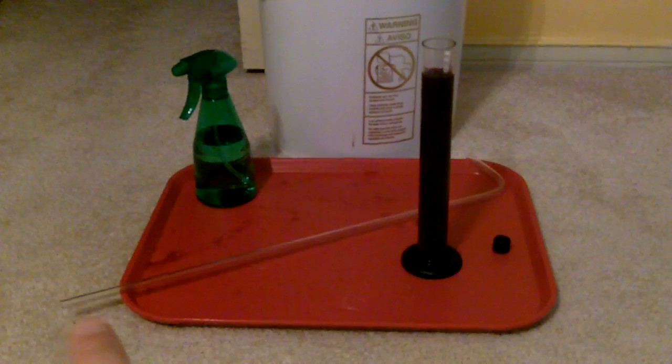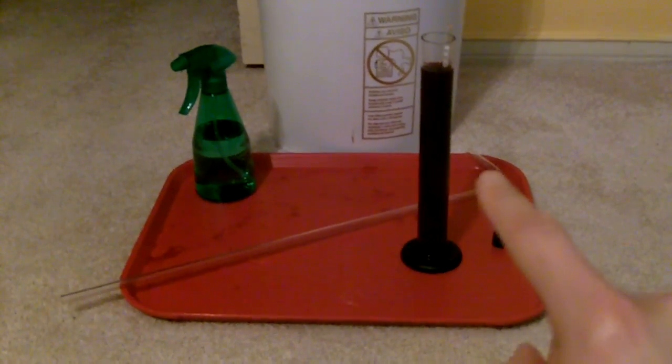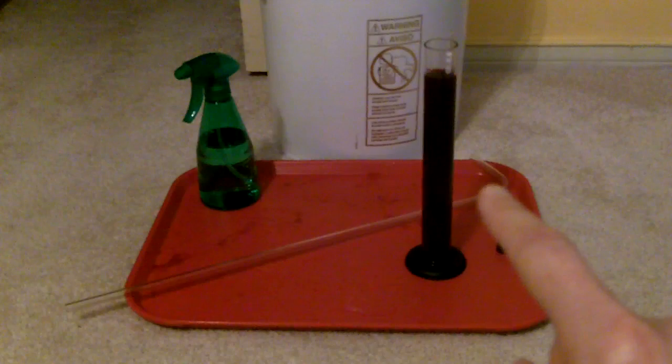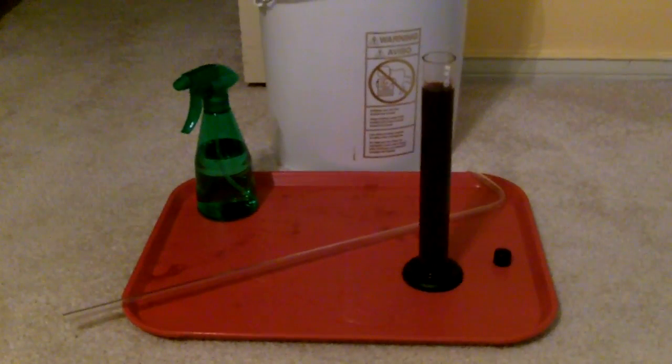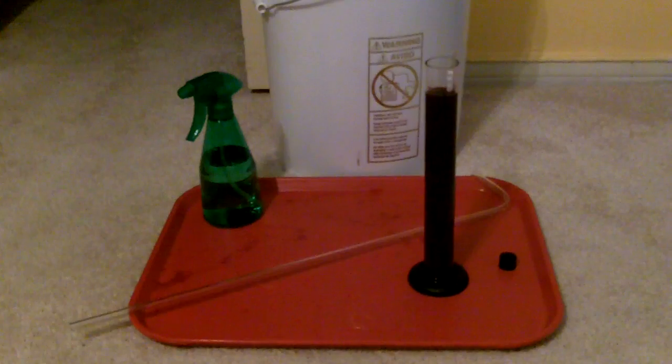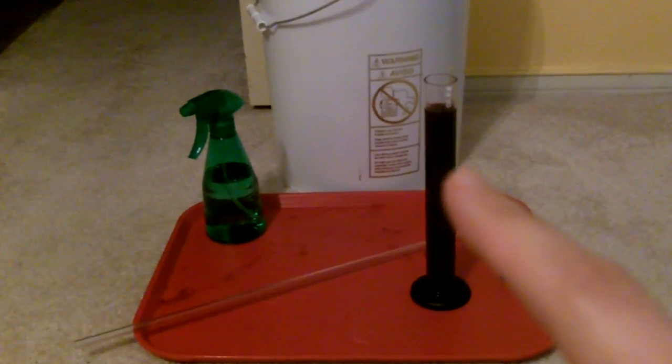And then back here is the racking cane. Now this racking cane is usually used to siphon the wine from the bucket into the carboy, which is not here.